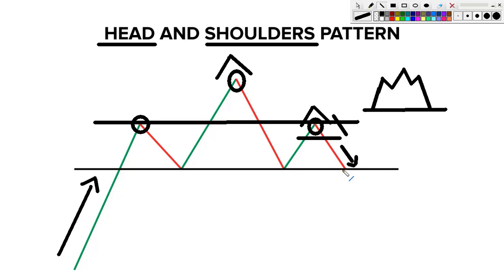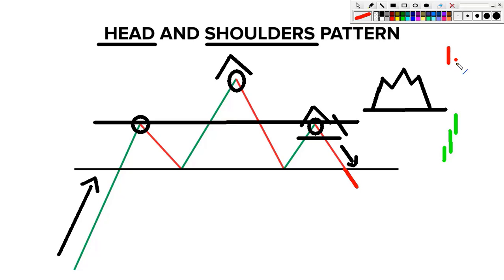So when a breakout occurs, you wait for the three soldiers candlestick pattern. If you're not familiar with it: you see one green candle, then the next one closes above that, then another one above that — that's the three soldiers pattern. The same concept applies in reverse on the downside.